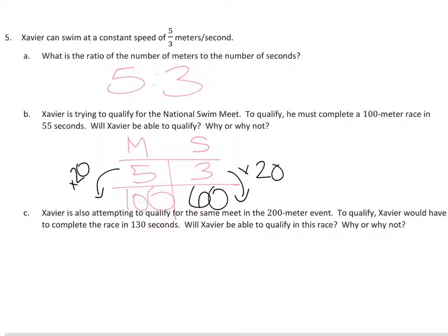Now we can answer the question: will Xavier be able to qualify? The answer is no. Looking at the chart, he goes 100 meters but it takes him 60 seconds. He needs to hit 100 meters in 55 seconds. You should explain why — Xavier could only hit 100 meters in 60 seconds, not 55. He's 5 seconds too slow.